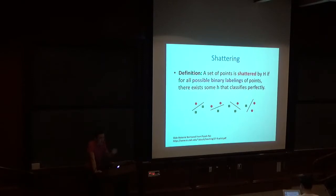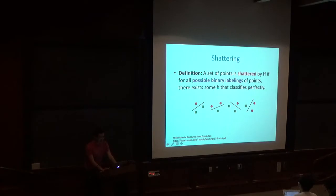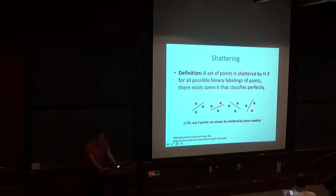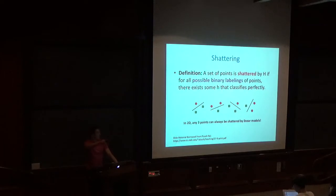A set of data points is shattered by hypothesis class H if, for all possible binary labelings of those points, there exists some h in H that classifies them perfectly. For two-dimensional binary classification with linear models, where H is the class of all 2D linear models, any set of three points can always be shattered by linear models. No matter how you label them with plus or minus binary labels, there always exists a linear model that achieves perfect accuracy.